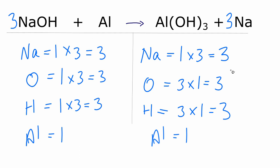And now everything is equal on both sides of the equation, and this equation is balanced. This is Dr. B with the balanced equation for NaOH plus Al yields Al(OH)₃ plus Na. Thanks for watching.